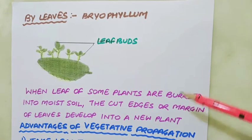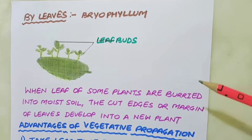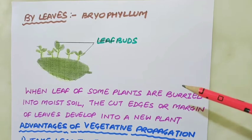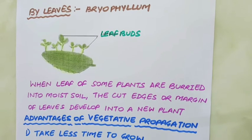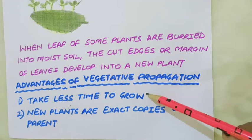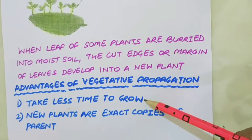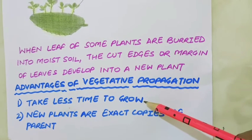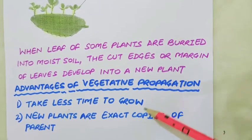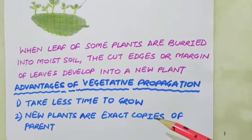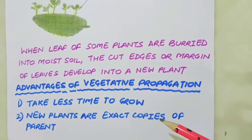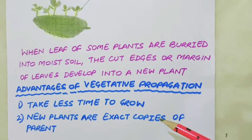What are the advantages of vegetative propagation techniques? Plants produced through vegetative propagation take less time to grow and bear flowers and fruit earlier than those produced from seeds. The new plants are exact copies of the parent plant because they are produced from a single parent.